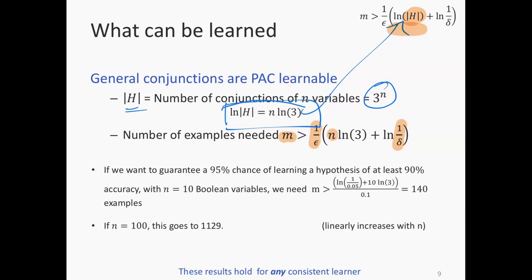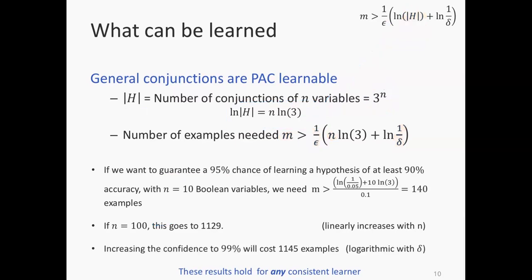Let me take one more example. I increased the dimensionality from 10 to 100. If I now also want to be 99% confident instead of 95%, delta becomes 0.01. There's a logarithmic dependence on 1/delta, so you pay a slightly higher cost — you need a few more examples, but in the same order of magnitude, giving you more confidence that learning will succeed.